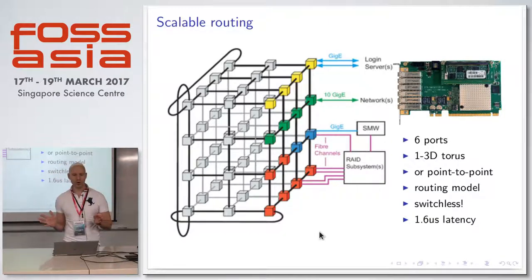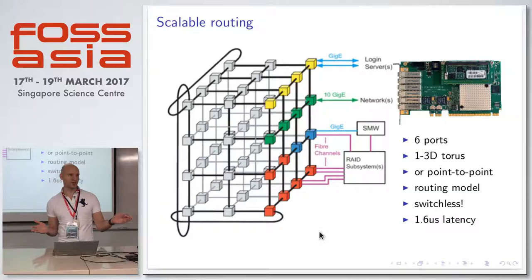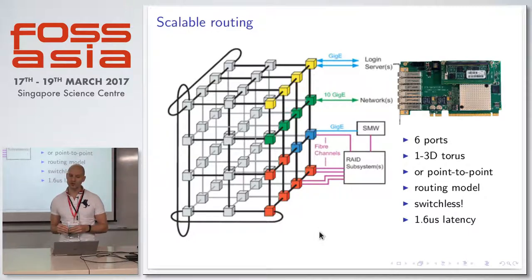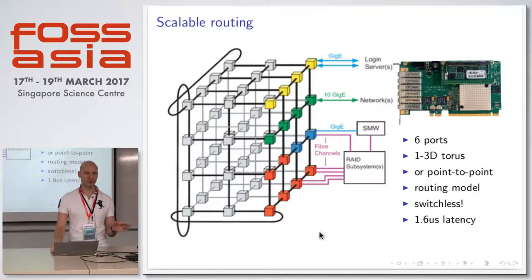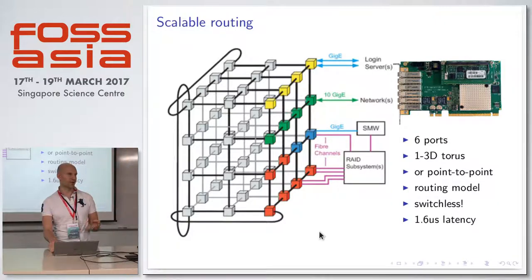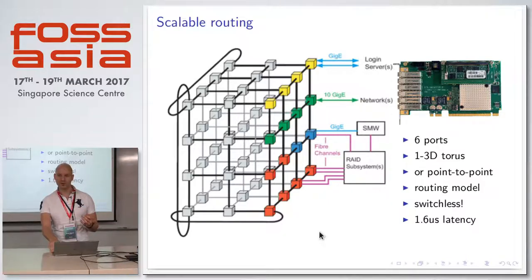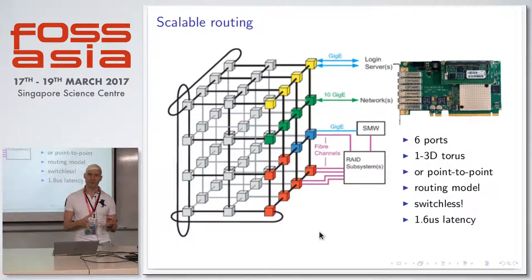On these systems — both Silicon Graphics and these Numerous Scale systems which many of our customers use — they all run Linux. Linux is the OS of choice. Windows doesn't go beyond, I think, 16 or maybe 32 sockets. So how does one add support in Linux for thousands of cores?